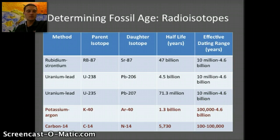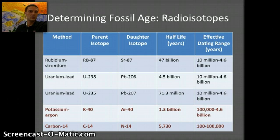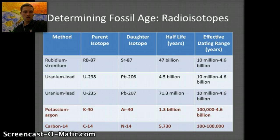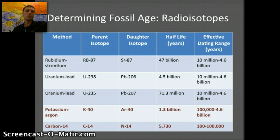When we look at radioisotopes, here are a couple of different isotopes with their parent isotopes, daughter isotopes, half-life, and effective dating range. The two you'll be required to know for IB are potassium-argon and carbon-14. For potassium, the daughter isotope is argon-40, with a half-life of 1.3 billion years and an effective dating range of 100,000 to 4.6 billion years. For carbon-14, the daughter isotope is nitrogen-14, with a much smaller effective dating range — up to about 100,000 years — so it's used for more recent samples.